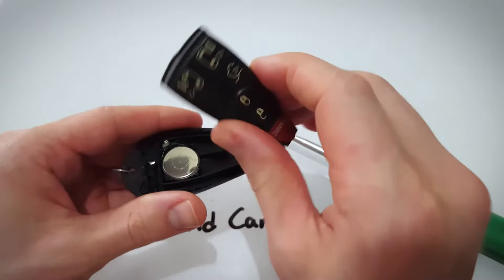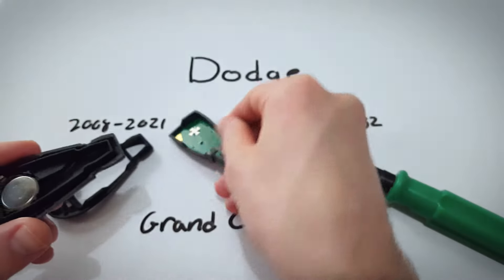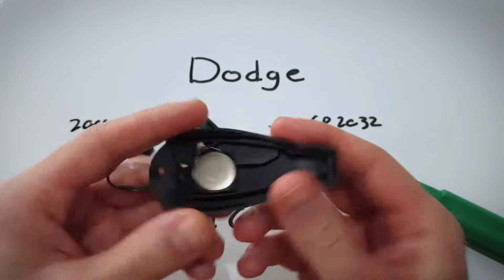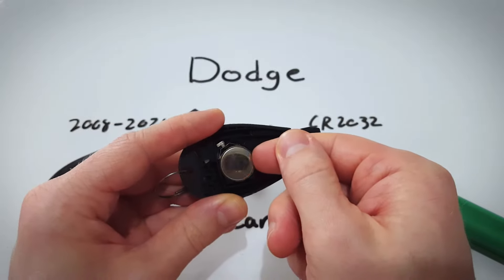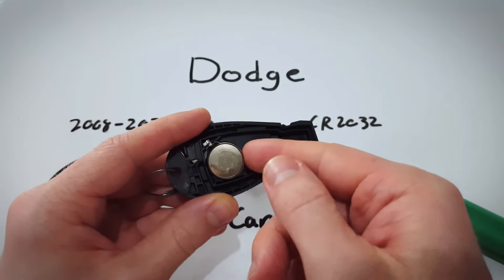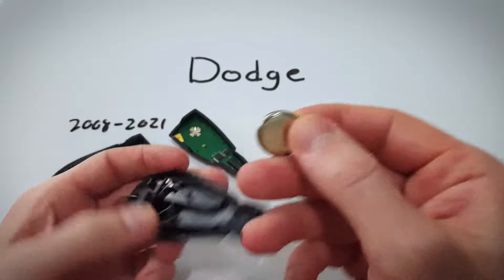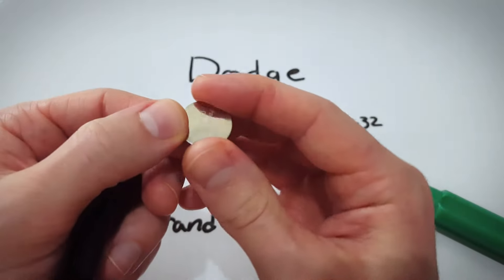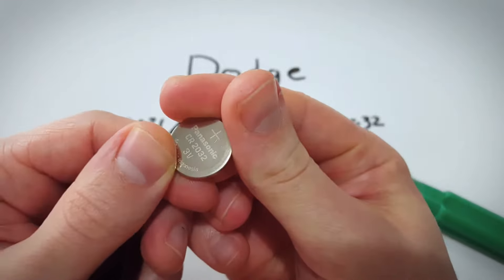You can carefully lift the buttons up off and set that to the side and here we have our battery. You can just get under it with your fingernail or your flathead screwdriver. Just carefully lift it up. Get rid of this old battery, you can see that's a 2032.